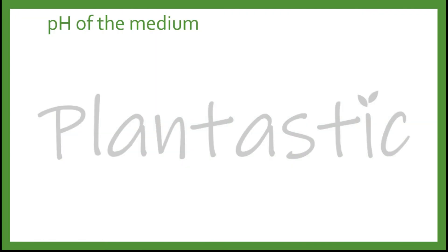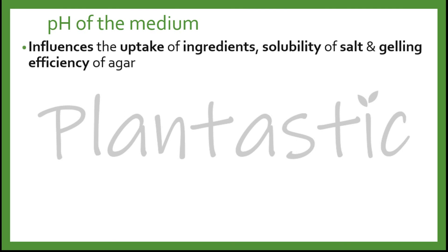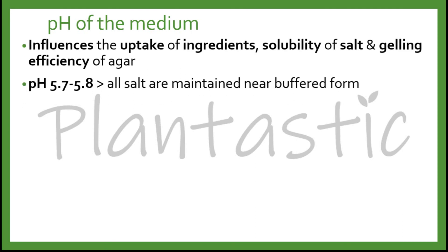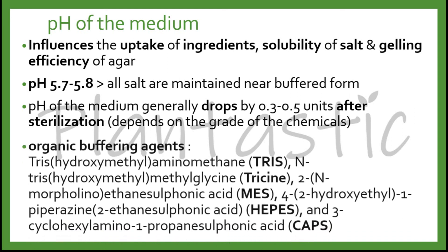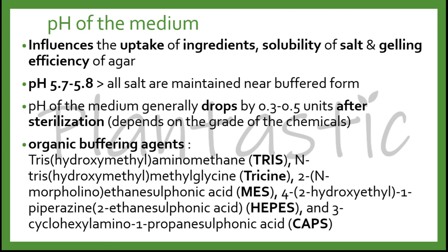Before we end our video, let us look into the pH of the medium. The pH of the medium influences the uptake of ingredients, the solubility of salts, and the gelling efficiency of the agar, meaning that the availability of nutrients strongly depends on the pH. It also influences gel texture. Around the pH range of 5.7 to 5.8, all salts are maintained near buffer form. The pH of the medium generally drops by 0.3 to 0.5 units after the sterilization process, and this decrease strongly depends on the grade of chemicals. Occasionally, you can add organic buffering agents such as TRIS, Tricine, MES, HEPES, and CAPS.